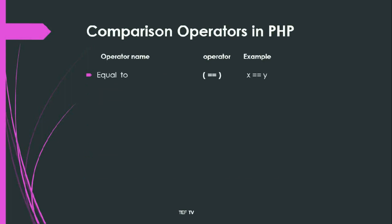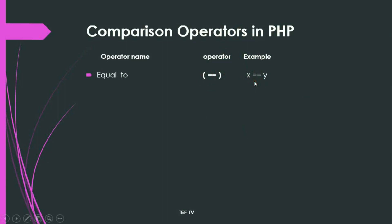We have a very common and simple comparison operator known as equal to. Equal to (==) is used to compare two values — whether the values of two variables are equal or not. Its notation is double equals to (==). Then we have triple equals to (===), which is used to compare both the value and the data type of two variables — whether the data type and value of two variables are equal or not.